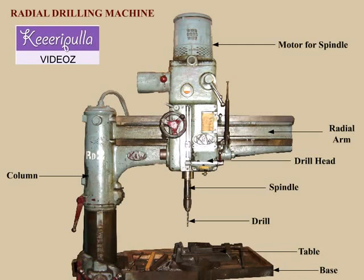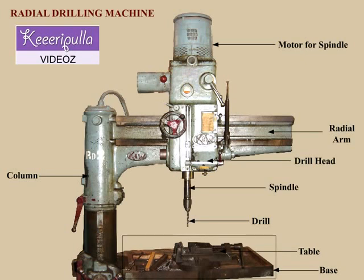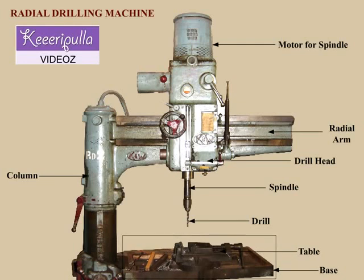Now we shall see the functions of various parts of the radial drilling machine. The base of a radial drilling machine is a large rectangular casting that is finished on its top to support a column on its one end and to hold the work table at the other end. T-slots are sometimes provided on the base for clamping the work when it serves as a table.